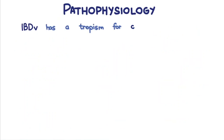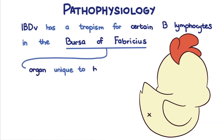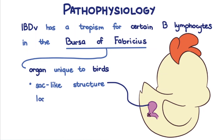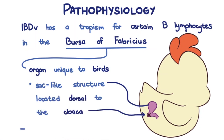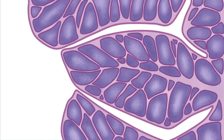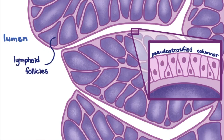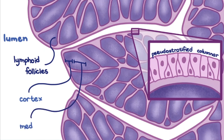Pathophysiology. The Infectious Bursal disease virus has a tropism for certain B lymphocytes in the Bursa of Fabricius. The Bursa of Fabricius is an organ unique to birds. It is a sac-like structure located dorsal to the cloaca, hence it is also called the cloacal bursa. Histologically, folds of pseudostratified columnar epithelium project into the lumen. Within these folds are lymphoid follicles with a dark cortex and light medulla. This is where we can find maturing B cells.